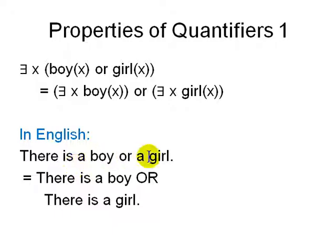In English you can say there is a boy or a girl, same as there is a boy or there is a girl.